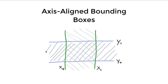Now let's talk about how bounding volumes can be implemented. There are a lot of different kinds of bounding volumes - there are spheres, there are boxes, and there are some other shapes. The thing we will talk about today is Axis-Aligned Bounding Boxes, short for AABB.